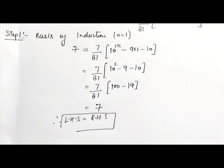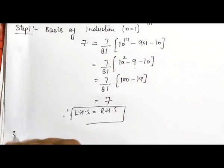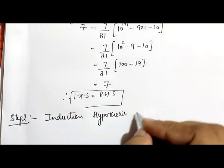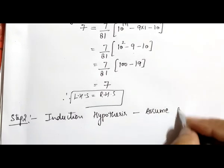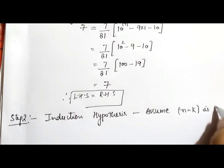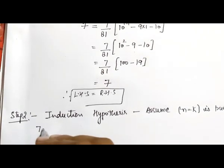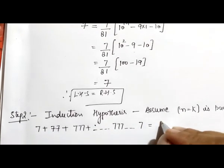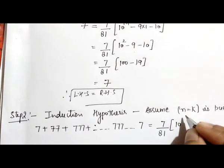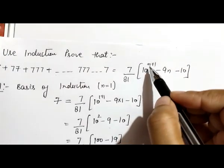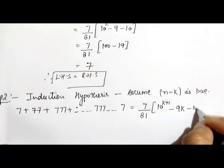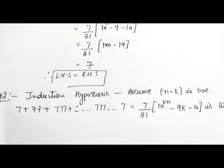This proves that when n = 1 the equation is true. Step 2 is the induction hypothesis. In this step, we assume that by putting n = k in the equation, the statement is true. So the statement becomes: 7 + 77 + 777 + ... + 777...7 = 7/81 × (10^(k+1) - 9k - 10) is true.